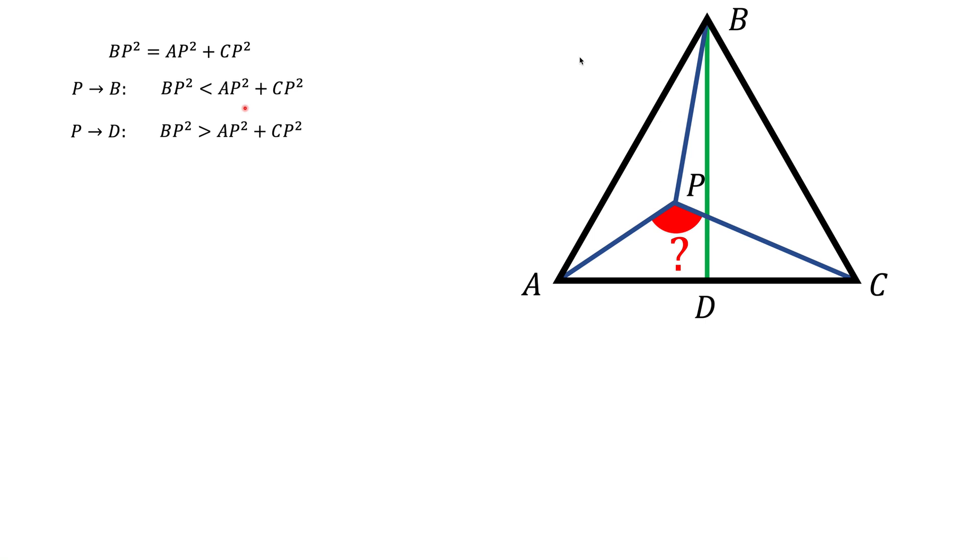But what it means here is that when P is on this green line and it's very close to B we have inequality like this, less than. But when we move on this green line towards D at some point we're gonna have a flipped inequality. And that means, assuming that everything changes continuously with no jumps, at some point on this line BP squared should be equal to AP squared plus CP squared.